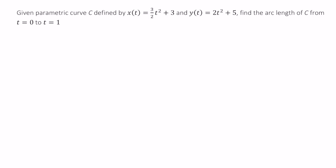In this case we're told that the x component is equal to 3 halves t squared plus 3 and the y component is equal to 2t squared plus 5. And we're going to find the length of the arc c from t equals 0 to t equals 1.